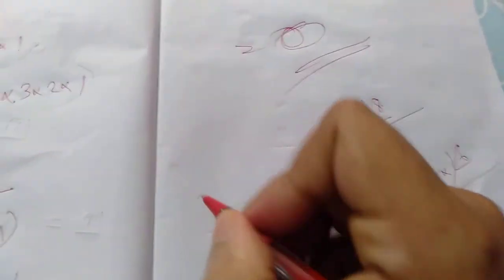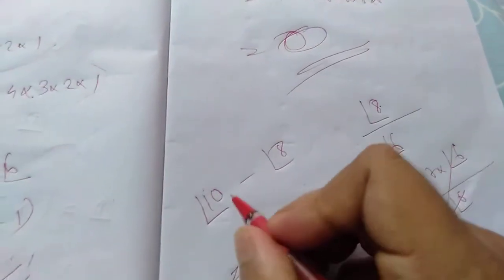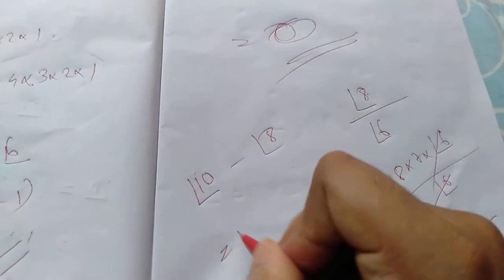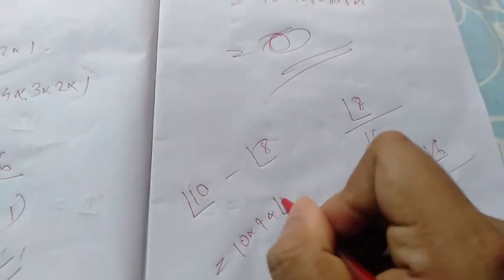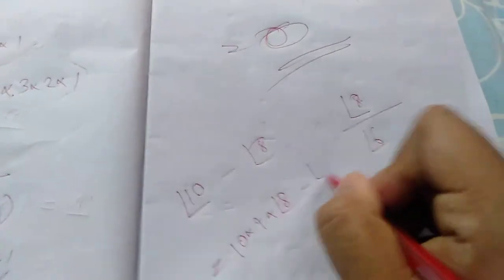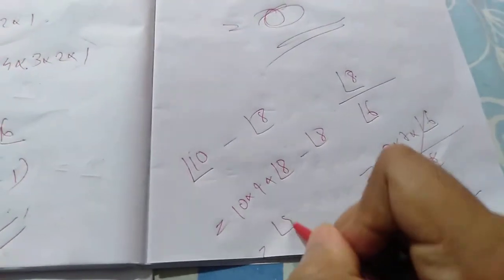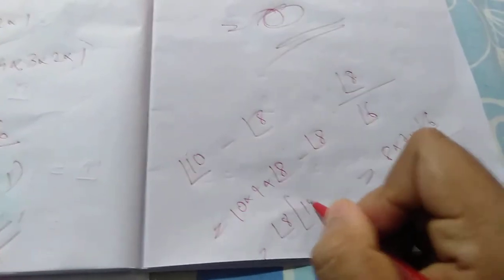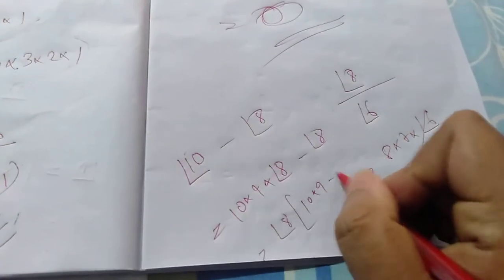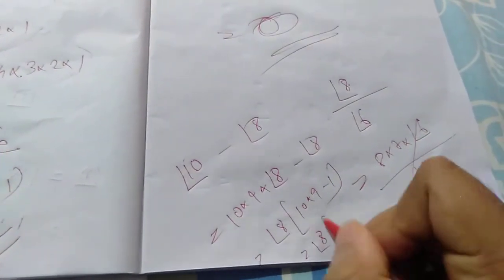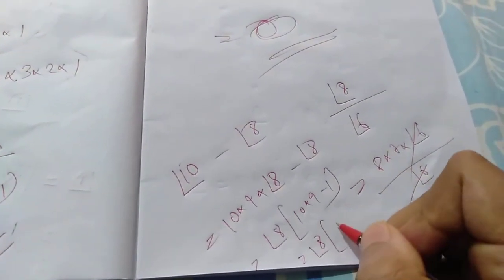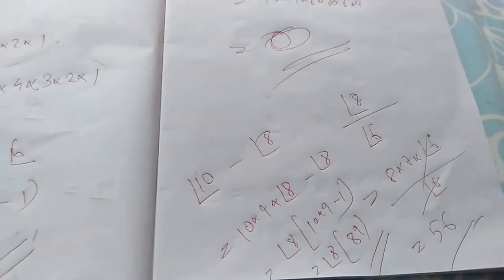This is one of the techniques. Now, 10 factorial minus 8 factorial — what is it? 10 factorial equals 10 into 9 into 8 factorial, minus 8 factorial. Taking 8 factorial common: 8 factorial into (10 into 9 minus 1). That is 8 factorial into (90 minus 1), which equals 8 factorial into 89. Make it easy, okay.